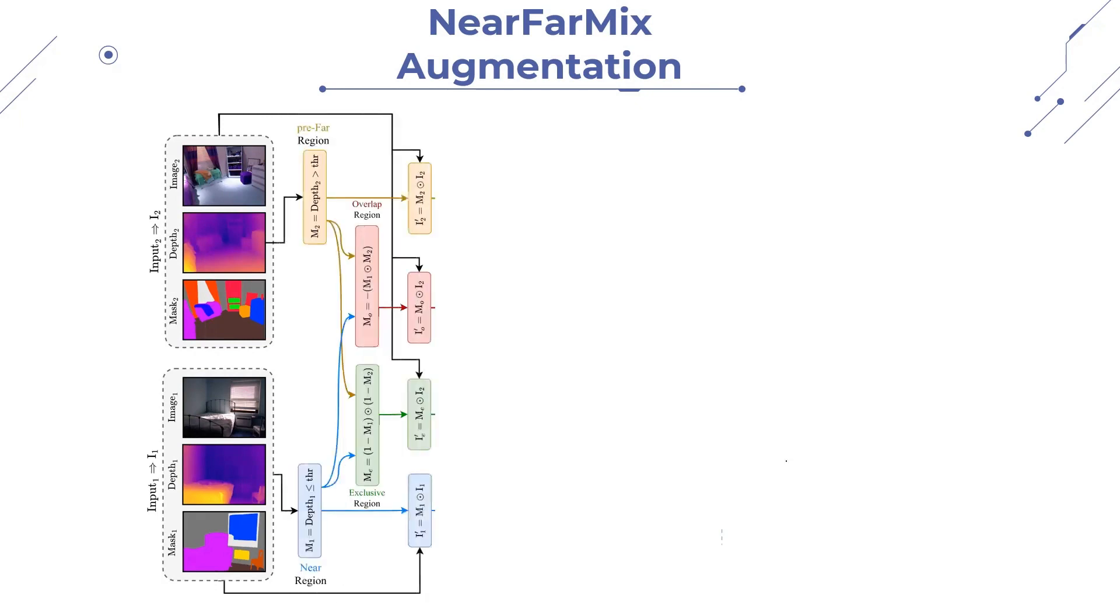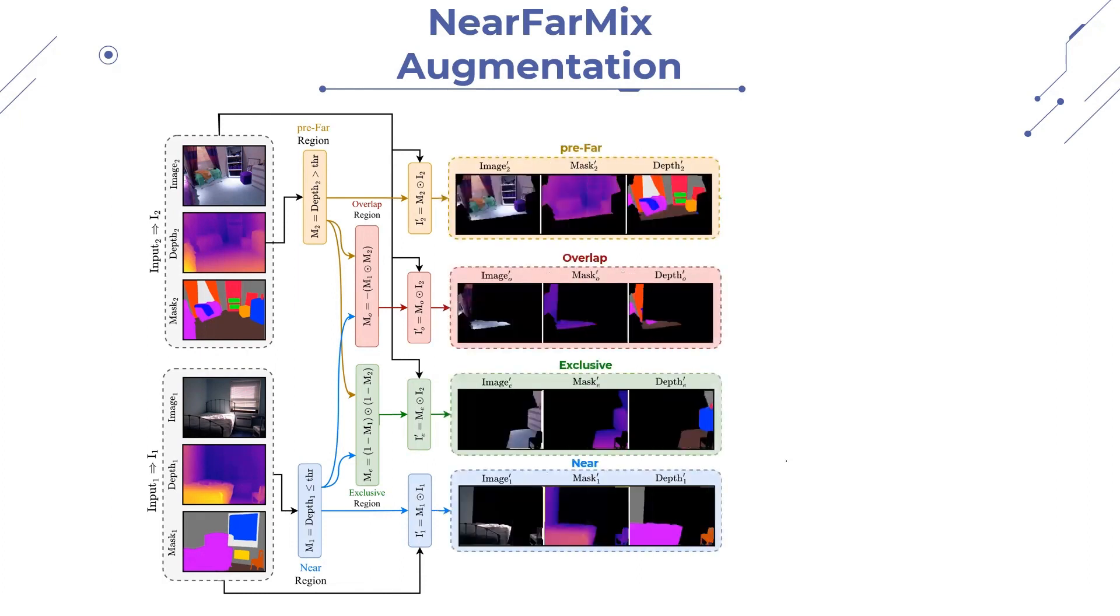Various masking operations generate four regions, namely pre-far, overlap, exclusive, and near. Then the overlap region is removed, and exclusive region is filled, using masking operations to combine with the pre-far region, resulting in the far region.